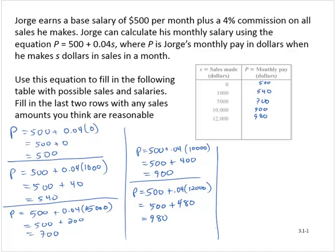And let's see. Now it says, fill in the last two rows with any sales amounts you think are reasonable. So I'm going to use 15,000 and 20,000.